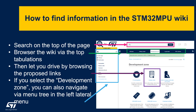To find information in the STM32MP1 Wiki: with the search, you can find articles by keywords. With the top tabulation, you can browse proposed links. In the development zone, you can navigate with the menu tree on the left.